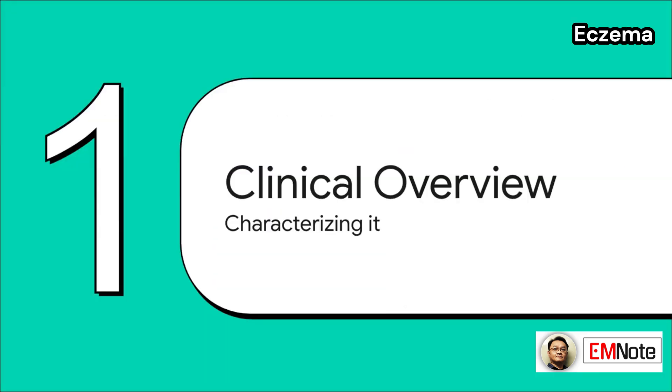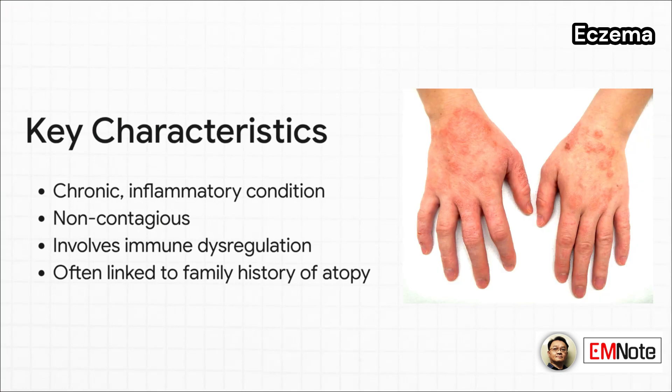Let's start with the basics and characterize the condition. A few key things to remember: eczema is chronic and inflammatory, but it's important to stress to patients that it is not contagious. It involves immune dysregulation, which is distinct from a true autoimmune disease. And there's a very strong genetic component — you'll often see it in patients with a personal or family history of atopy, meaning eczema, asthma, or allergies.